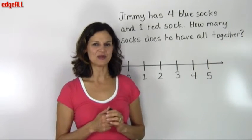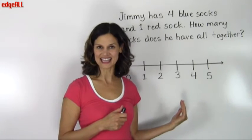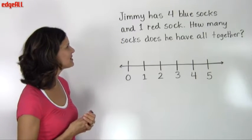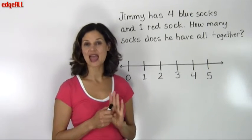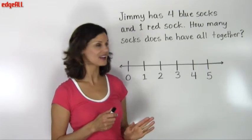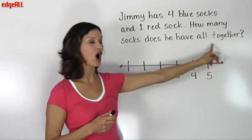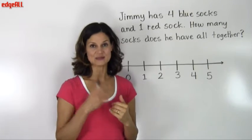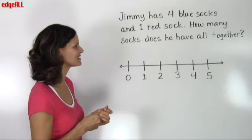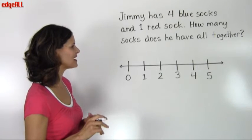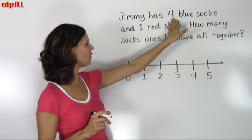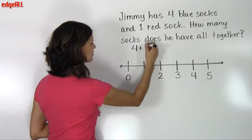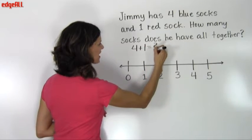Let's look at an example of adding numbers together using the number line. So our example says Jimmy has 4 blue socks and 1 red sock. How many socks does he have all together? So we need to add together his blue socks and his red socks. So this problem basically asks us to add 4 plus 1.